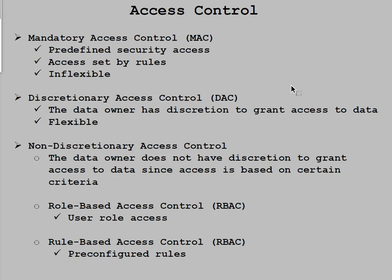The difference between Mandatory Access Control and Discretionary Access Control is that in discretionary access control, the people who actually create the data are the owners. For example, in a commercial organization, if somebody created data worksheets on revenue for the next fiscal year, they are ultimately the owners and can provide you access for one reason or another. There's nothing to preclude you from getting that data — the owners are the ones who allow access.